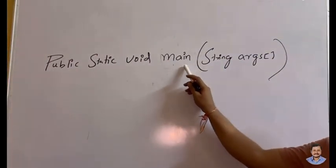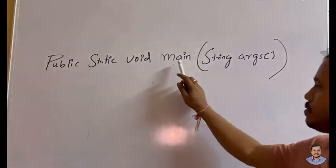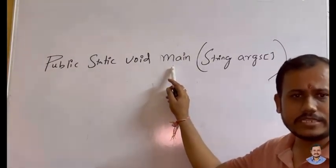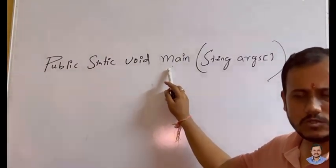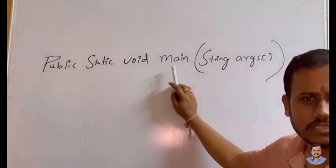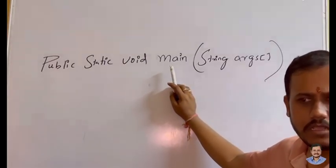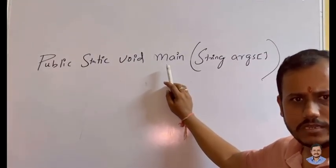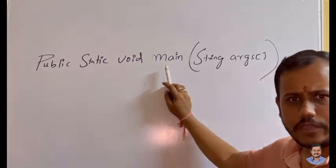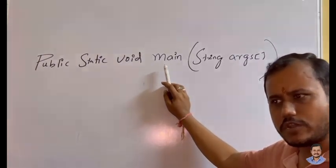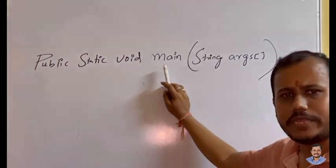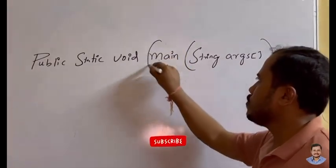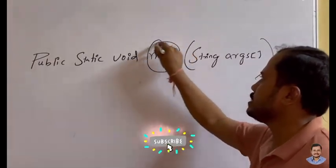First, what is this main? The main is a predefined method in Java, like in C and C++. The question is: why do we need to write this main method? In order to make a common point for execution, your program should start from one common point, and that common point is nothing but your main method.